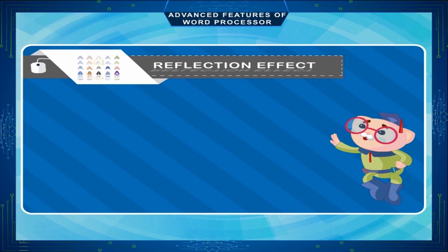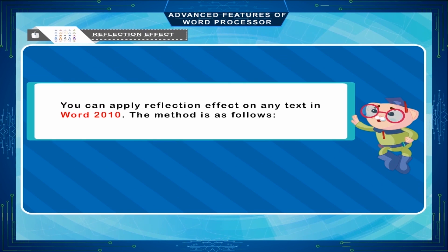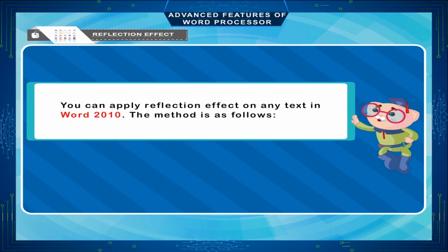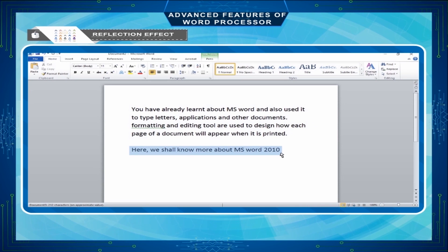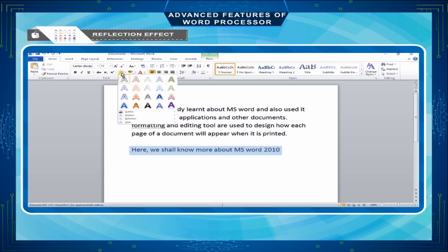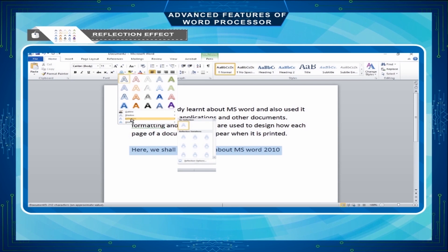Reflection Effect. You can apply reflection effect on any text in Word 2010. The method is as follows. Select the text on which you want to apply reflection effect. Click on the text effects button. A pop-up box will open up. Click on Reflection. You will see different types of reflection from which you can select any one to apply on your text.